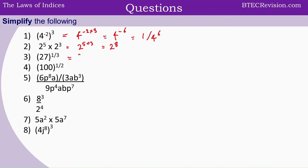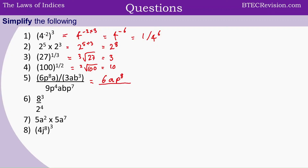Question 3: that is the cube root of 27, so that has to be 3. And for question 4, that is the square root of 100, so that has to be 10. Question 5: we have to collect like terms to simplify. We start with the numbers — 6 — then place the letters alphabetically. So we have a, p to the power of 8 in the numerator, divided by a, b cubed. The a's cancel, and we're left with the expression simplified further.